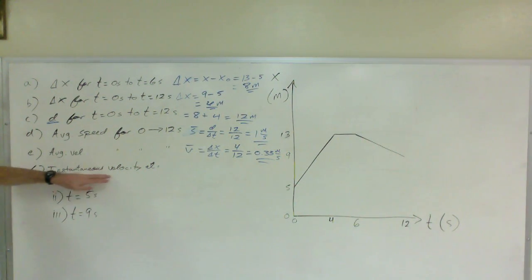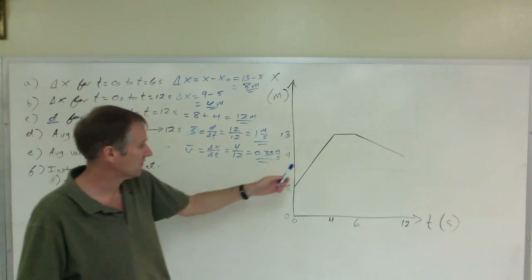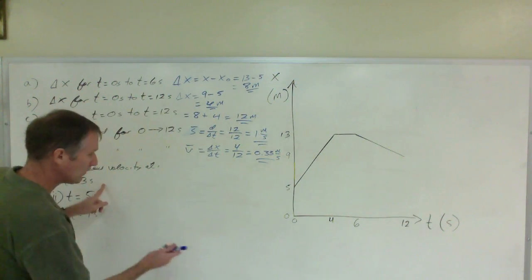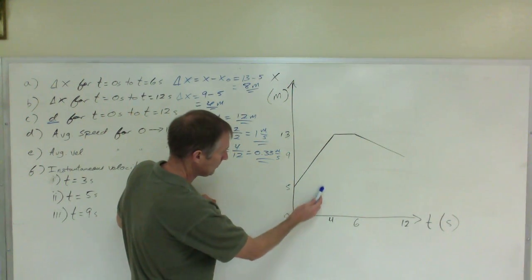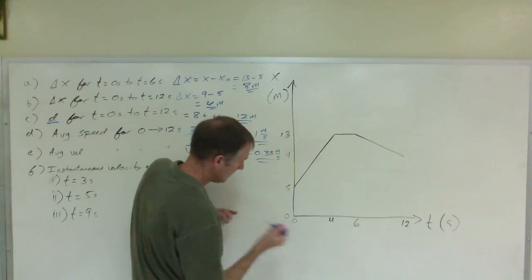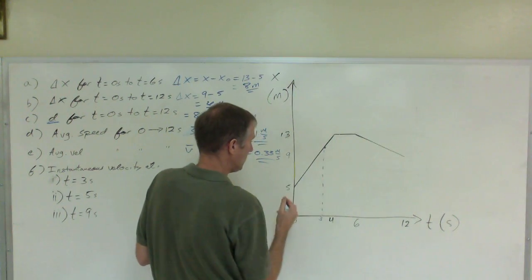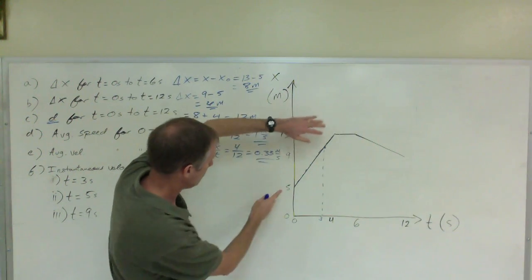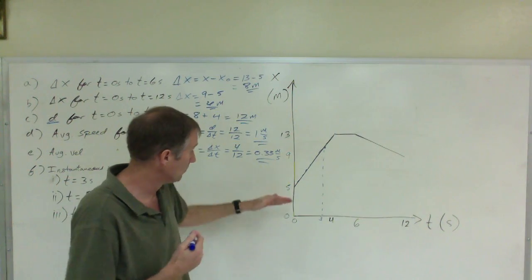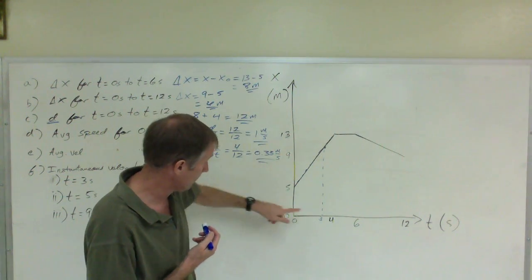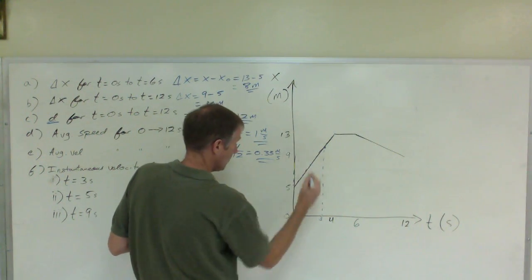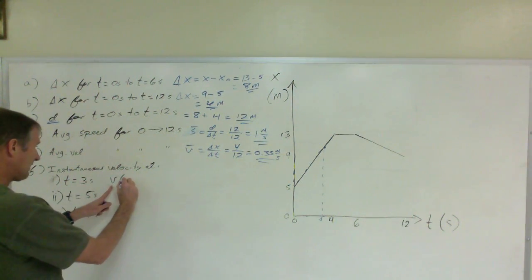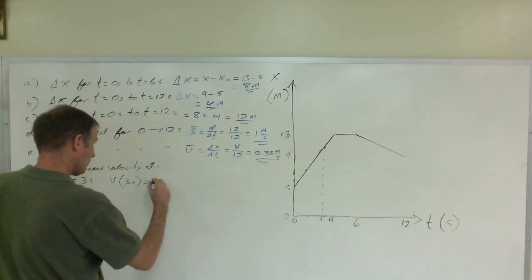The instantaneous velocity is the slope of the graph — the slope of the line as it passes through that point. At 3 seconds, you find the slope of that straight line segment. It rises 8 meters over 4 seconds, so the slope is 8 over 4, which is 2 meters per second. The instantaneous velocity at 3 seconds is 2 meters per second.